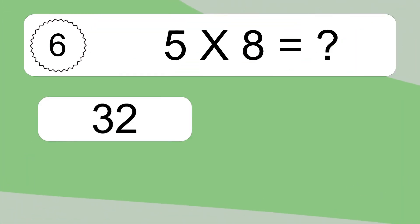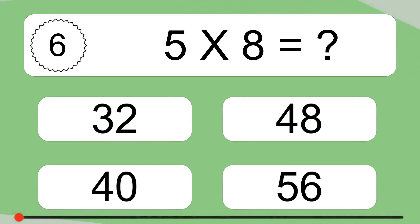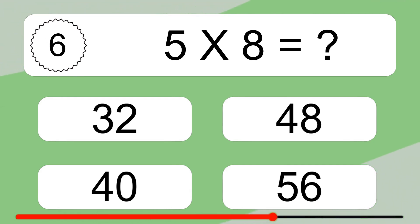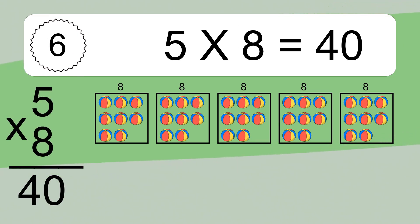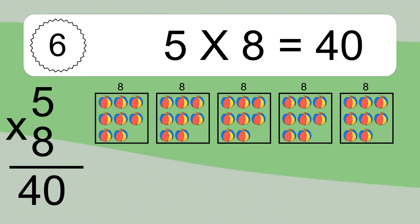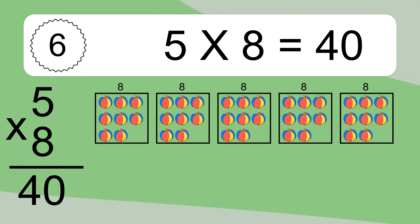5 times 8 equals what? 5 times 8 equals 40. We have 5 boxes, and each box has 8 colorful balls inside. If you count all the balls in all the boxes together, you will have 5 times 8 balls. This equals 40 balls.